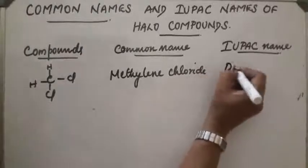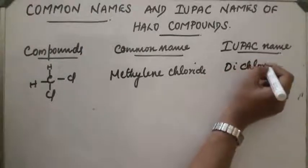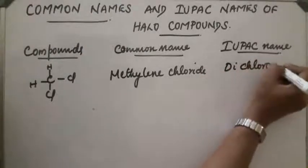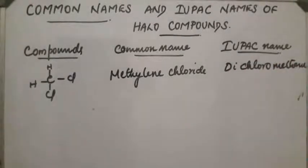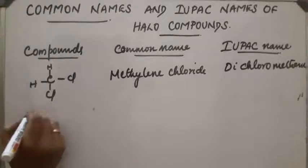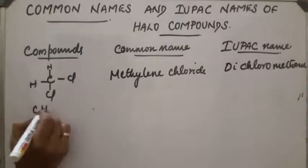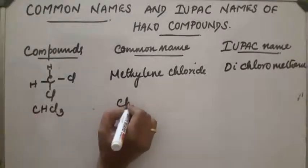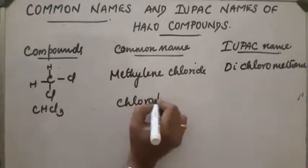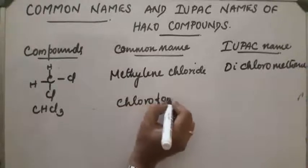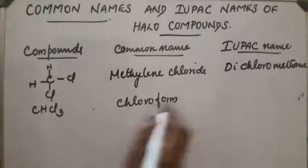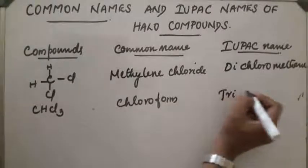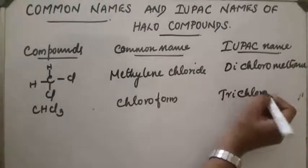The IUPAC name of CH2Cl2 is dichloromethane. Next example: CHCl3. Its common name is chloroform and its IUPAC name is trichloromethane.